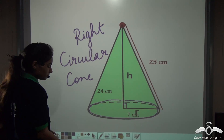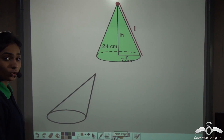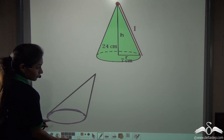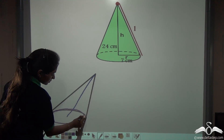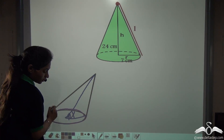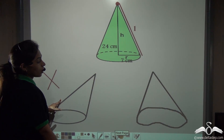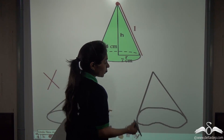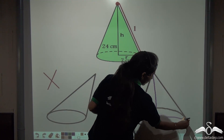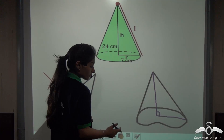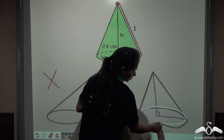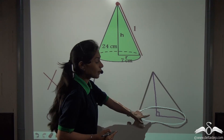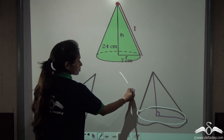Now, what about this other cone — is it a right circular cone? You can say that this cone has a circular base, but is the height creating a right angle with the radius? No, this is not a right angle, so this is not a right circular cone. What about this third cone — is it a right circular cone? The height of this cone is at a right angle with the base, but the difference is that it does not have a circular base. So this is also not a right circular cone.